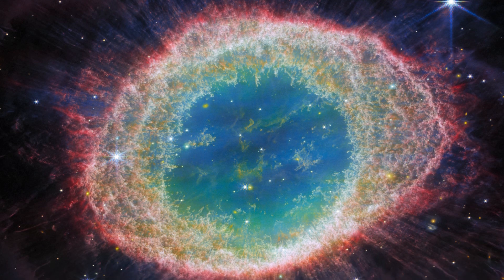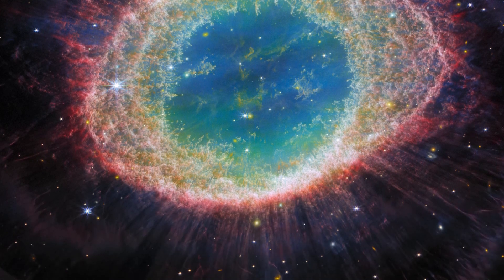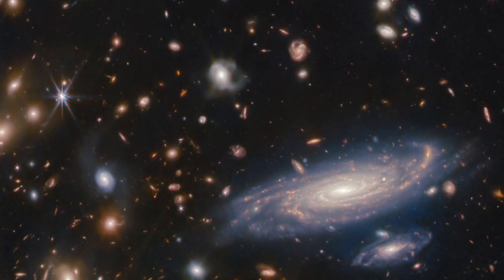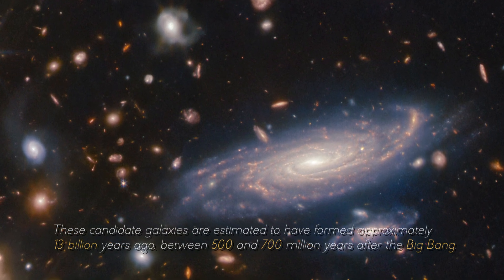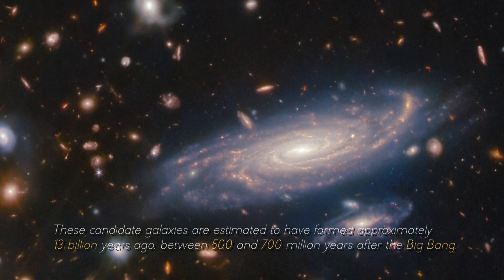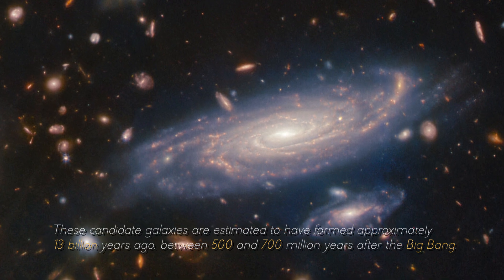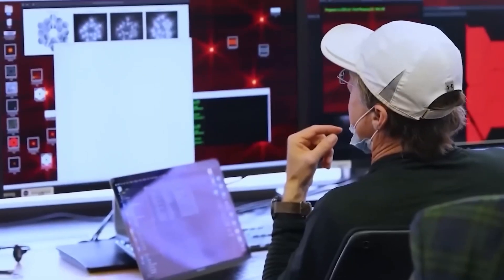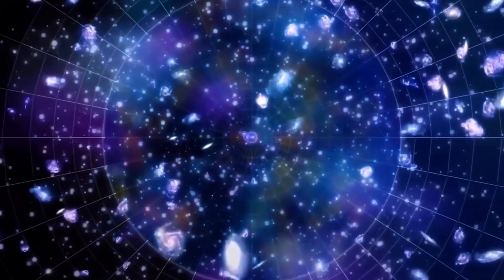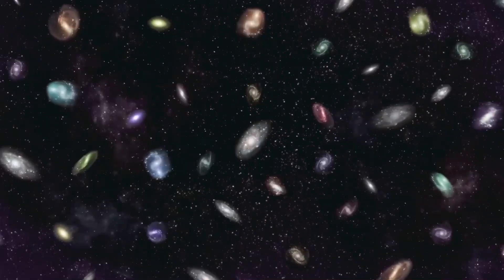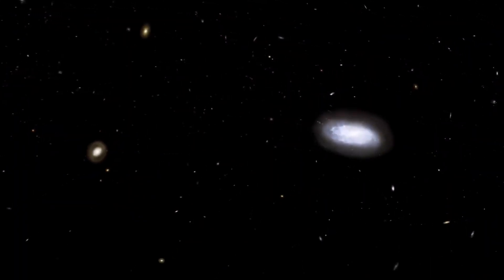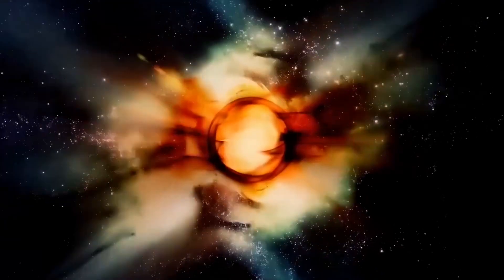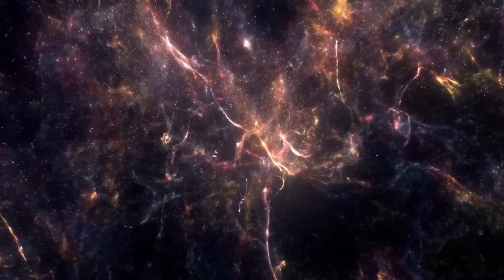However, images captured by the James Webb Space Telescope are challenging the Big Bang Theory, as they show galaxies of enormous sizes that appear not to have been able to exist or are not consistent with the Big Bang Theory. These candidate galaxies are estimated to have formed approximately 13 billion years ago, between 500 and 700 million years after the Big Bang. Astronomers had the expectation of observing young, small galaxies in this region of early space. However, images captured by the space telescope reveal that the stellar systems may contain about the same number of stars as our own Milky Way galaxy, instead of finding tiny, young galaxies discovering mature galaxies similar to our own in what was thought to be the dawn of the universe.